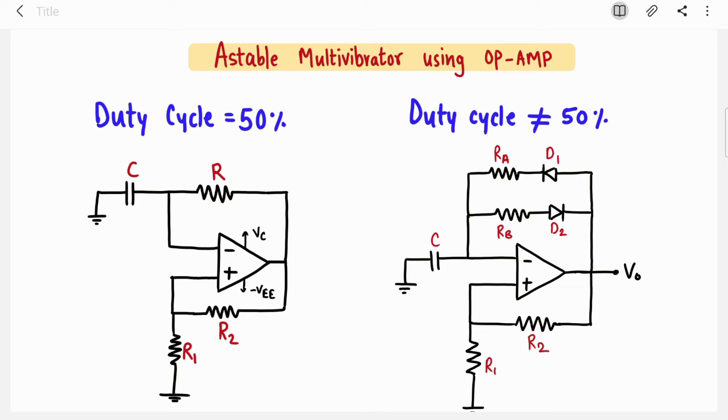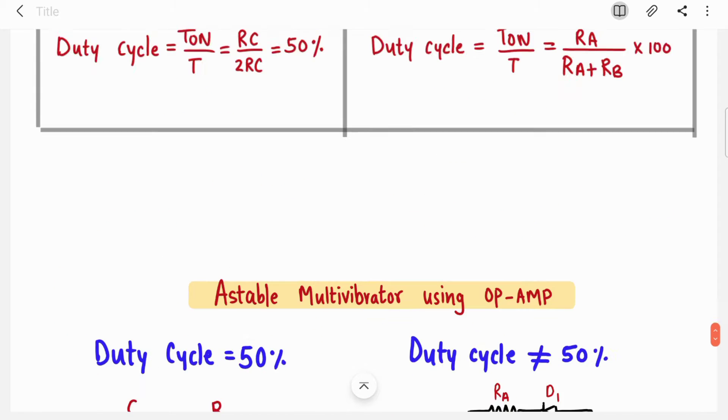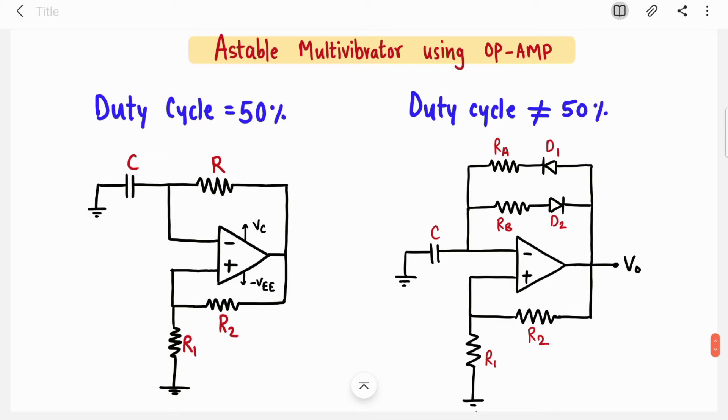We have already covered this case and solved one numerical in the previous video. In this video, we are going to solve numerical for asymmetrical one where duty cycle is not equal to 50 percent. Before jumping to the question, I will give you a quick summary.